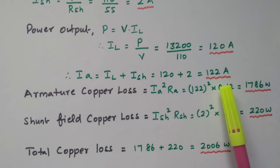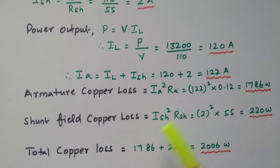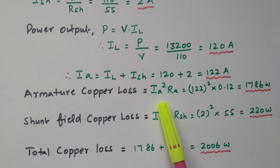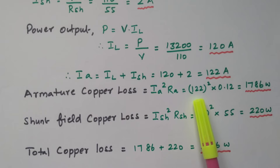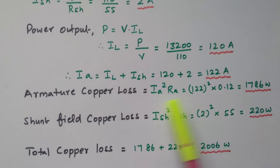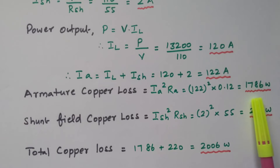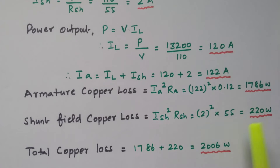With this armature value we can calculate the copper losses one by one. Armature copper loss = Ia² × Ra. The formula for armature copper loss is Ia² × Ra. So that is 122² × 0.12, which equals 1,786 watts armature copper loss.